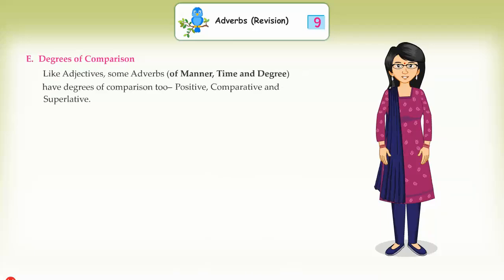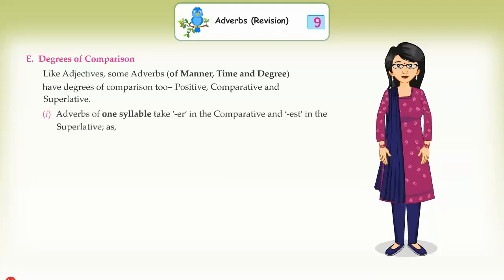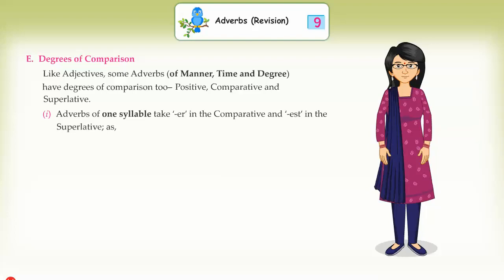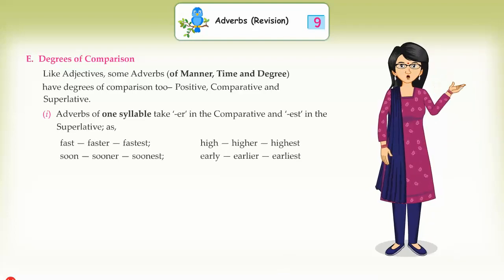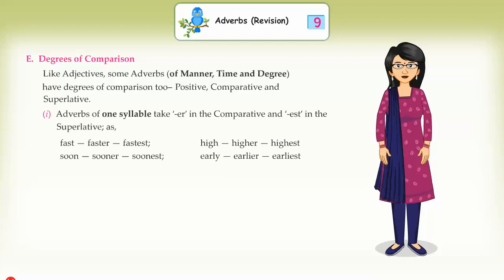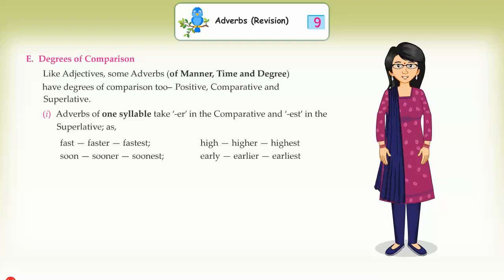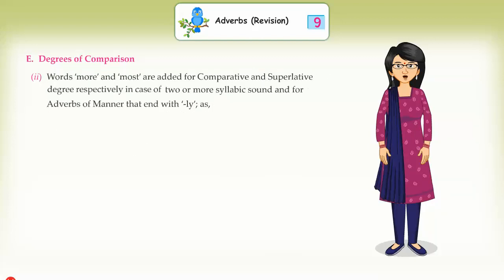E: Degrees of Comparison. Like adjectives, some adverbs of manner, time, and degree have degrees of comparison: positive, comparative, and superlative. (1) Adverbs of one syllable take '-er' in the comparative and '-est' in the superlative. Examples: fast → faster → fastest, high → higher → highest, soon → sooner → soonest, early → earlier → earliest.